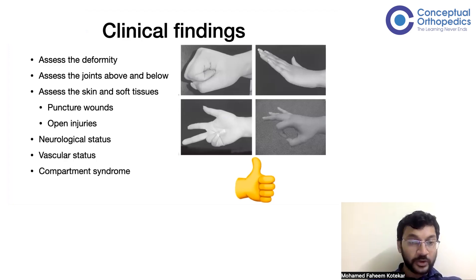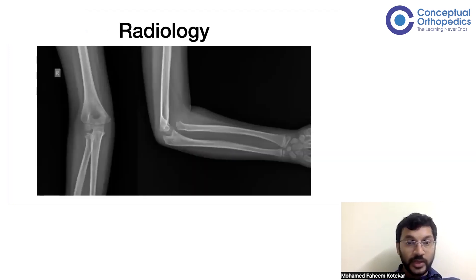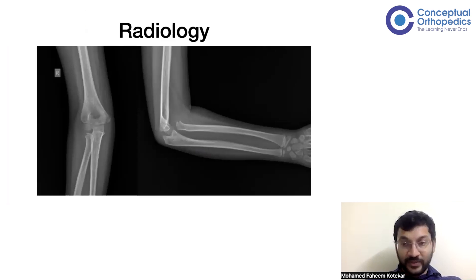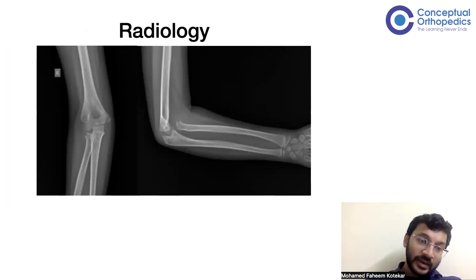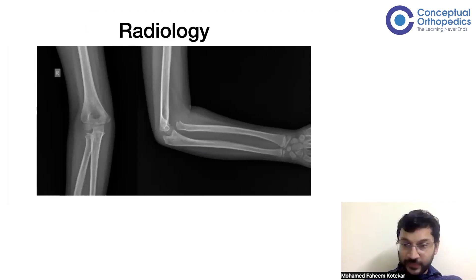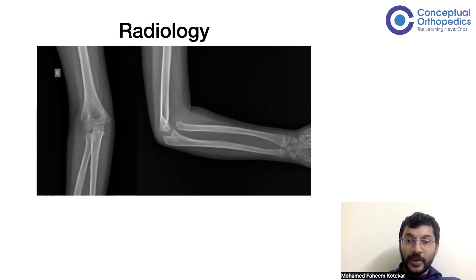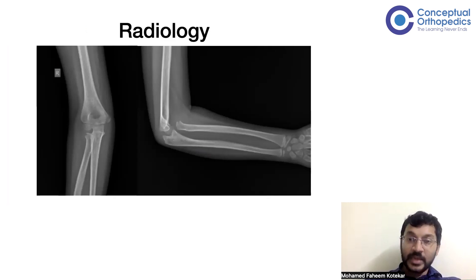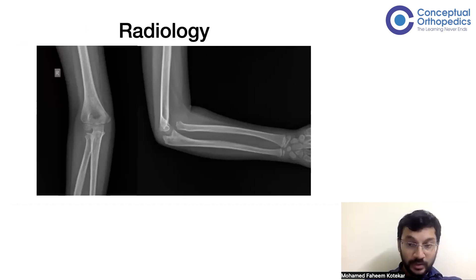Also check vascular condition and for compartment syndrome. Once you have assessed the child clinically, send them for X-rays — AP and lateral of the elbow and forearm. On the AP view the ulna looks straight and the radius looks fairly normal. On the lateral view, if you look carefully, the radiocapitellar line is not passing through the capitellum — it is passing proximal to it — indicating incongruity in the radiocapitellar joint.